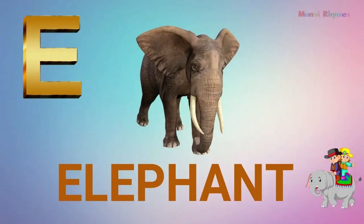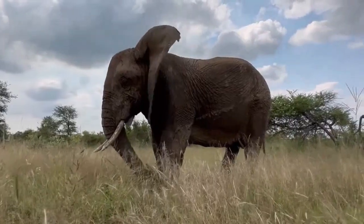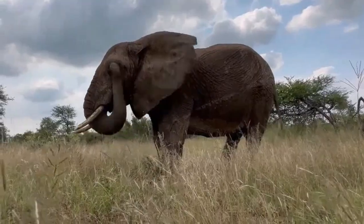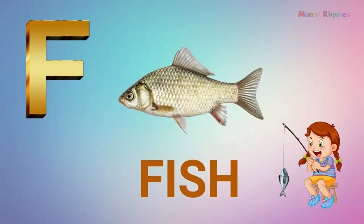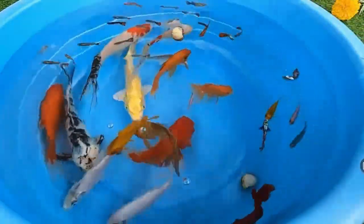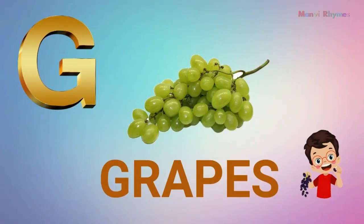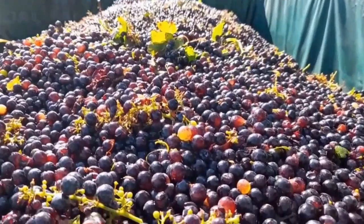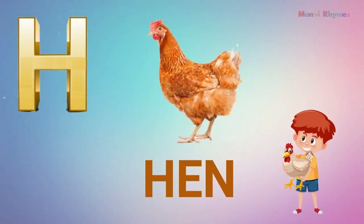E for elephant. F for fish. G for grapes. H for hen.